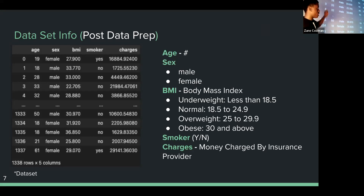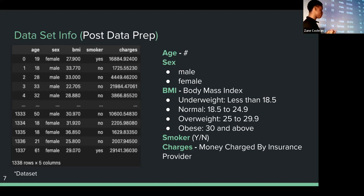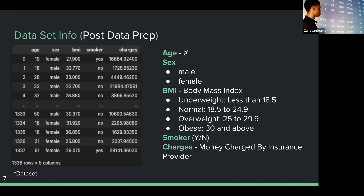The main columns include age, gender, and body mass index, which is scaled as follows: underweight is 18.5 and below, normal is 18.5 to 24.9, overweight is 25 to 29.9, and obese is 30 and above. Smoking was also in the data as a basic yes or no variable. And then the amount of money charged by insurance is what we'll be looking at next.